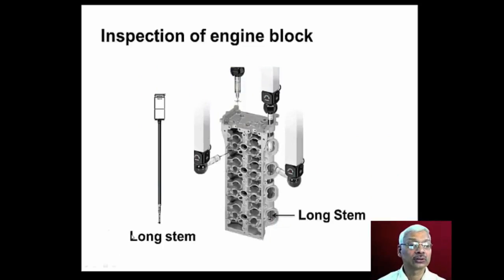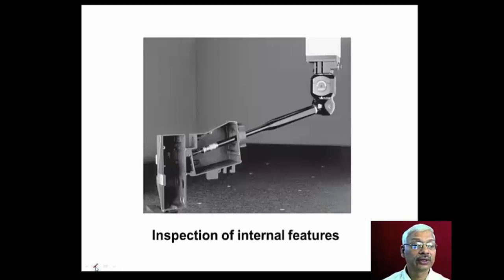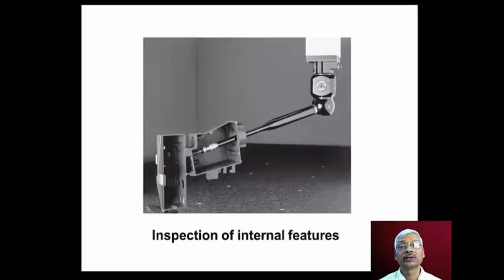Inspection of an engine block uses long stems — the probe enters deep into the hole to check features at a deep surface. Using motorized probes the probe can be oriented to check various features, including the use of a star-type probe. An extension bar with the probe at its end is used to check inner details, entering into the hole to check the features available there.